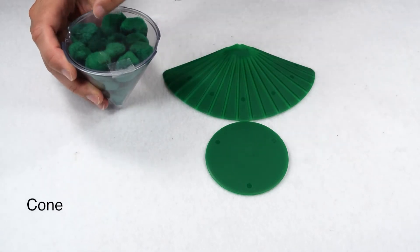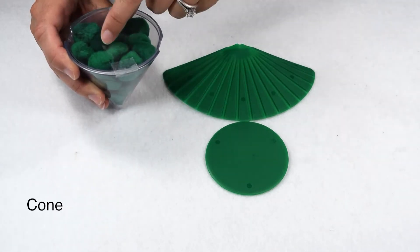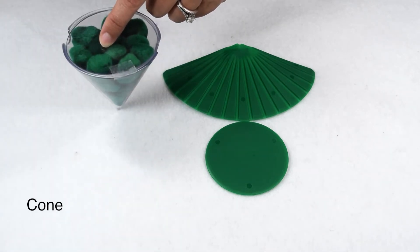On a cone, when we go to measure its dimensions, we can measure its radius, we can measure the actual height of the cone, and then we can also measure the slant height of the lateral face.